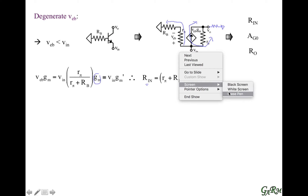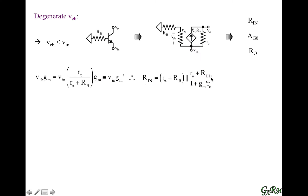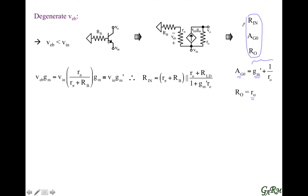Now that we have the input resistance, we can get the short-circuit transconductance. The short-circuit transconductance is the same as the common base, except that the gm current is a voltage-divided fraction — it's degenerated. The short-circuit output resistance is the same as the common base, and since that output resistance was not sensitive to gm, we see that base degeneration doesn't affect it. So we have the complete two-port network for the degenerated common base.